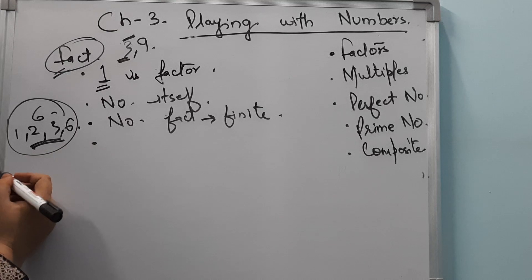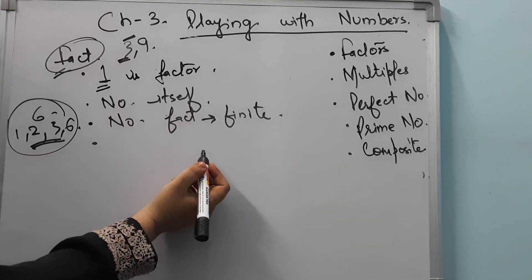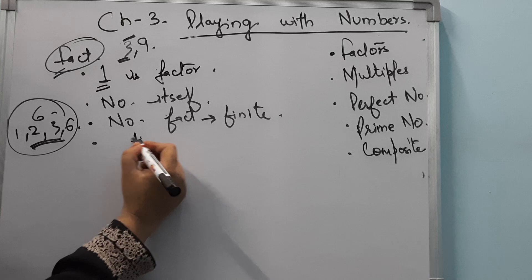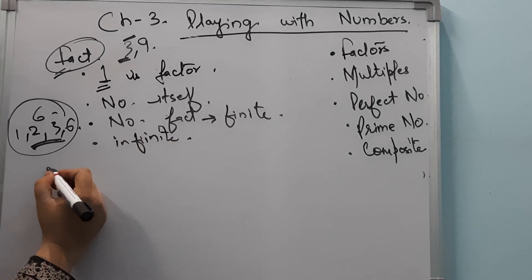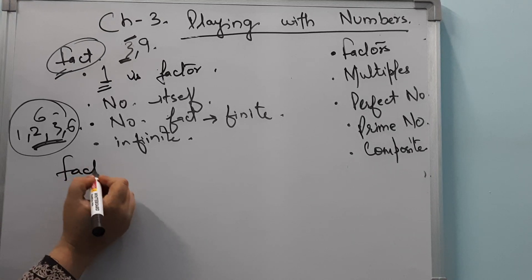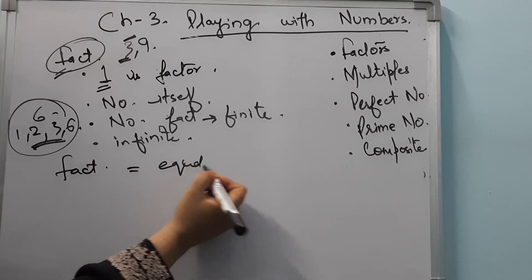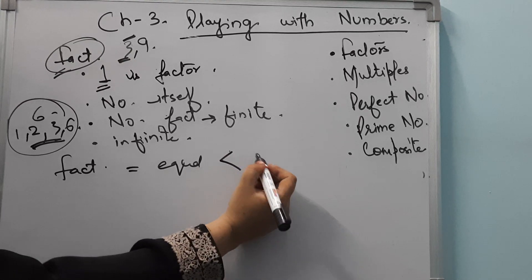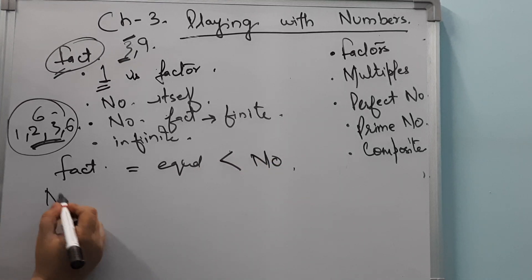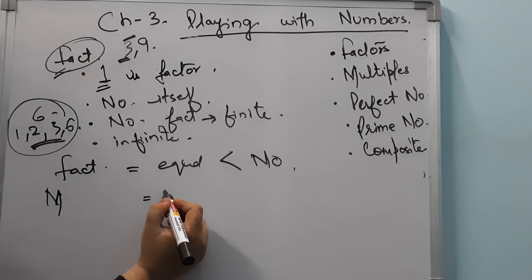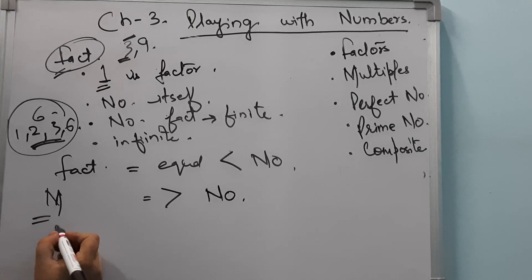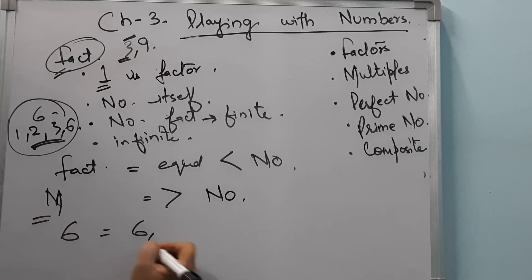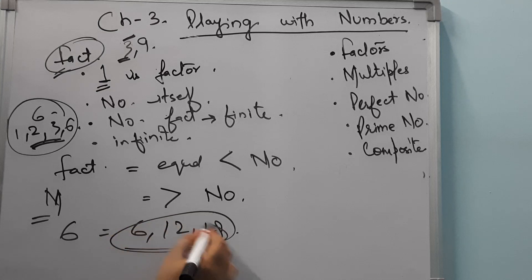While in the case of multiples, multiples are infinite. Factors are always equal to or less than the number, but multiples are always greater than or equal to that number. For example, the multiples of 6 are 6, 12, 18. They are always equal to or greater than the number.